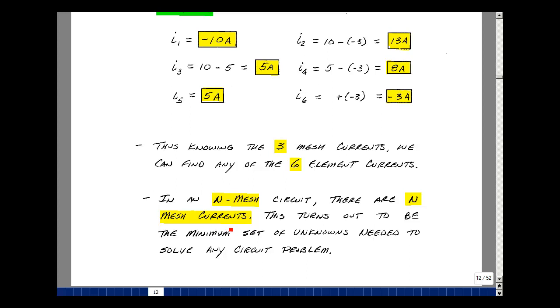If we knew less information than that, then we really couldn't solve for the currents in the elements. So this turns out again to be the minimum set of unknowns. And this is mesh current analysis.